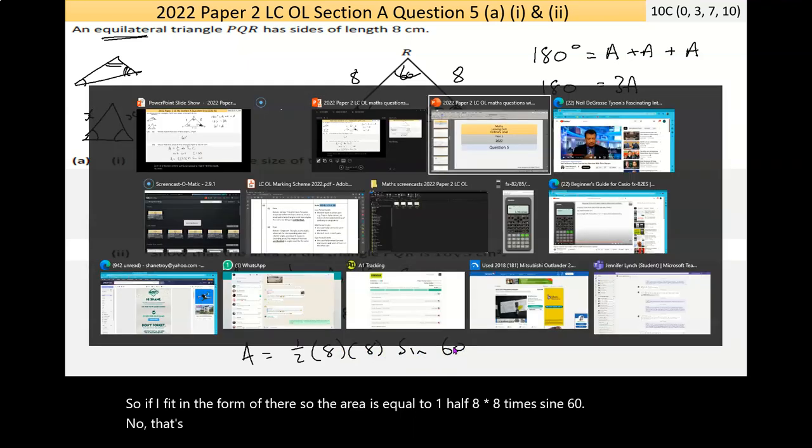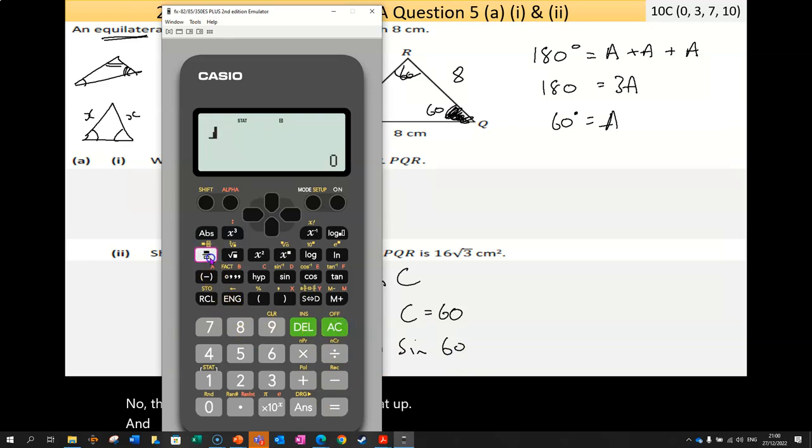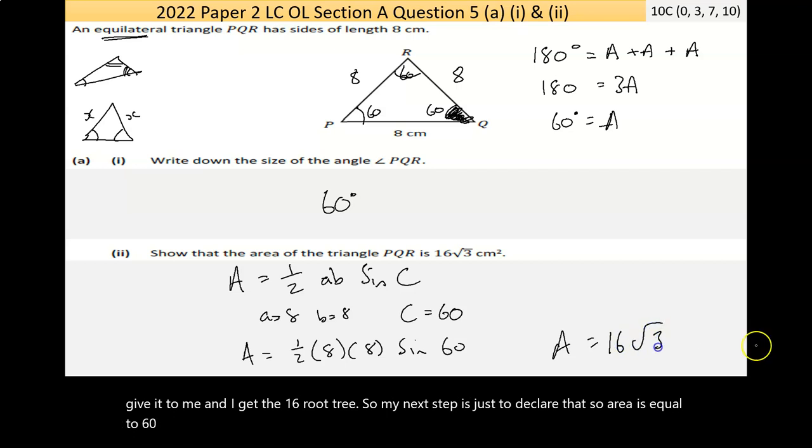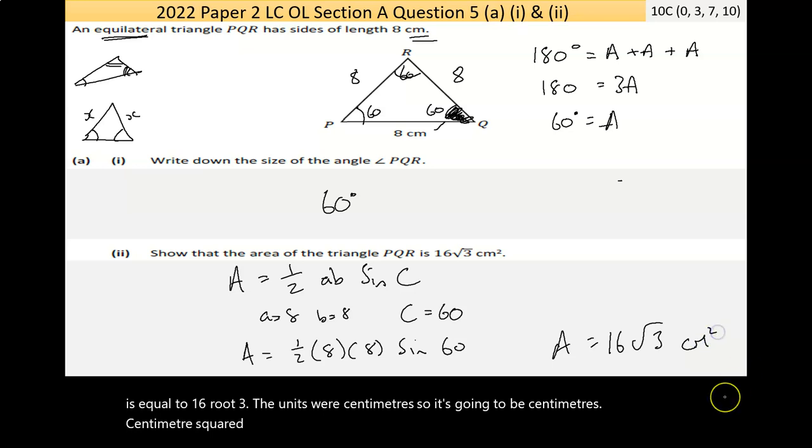Now that's a calculator job, so let's bring that up. It's a half times, I'm in stat mode there, so I need to go back to computation. So it's a half times 8 times 8 times sine of 60. I just want to make sure my calculator is set to degrees, and the D symbol is there, so this should give it to me, and I get the 16 root 3. So my next step is just to declare that. Area is equal to 16 root 3. The units were centimeters, so it's going to be centimeters squared.